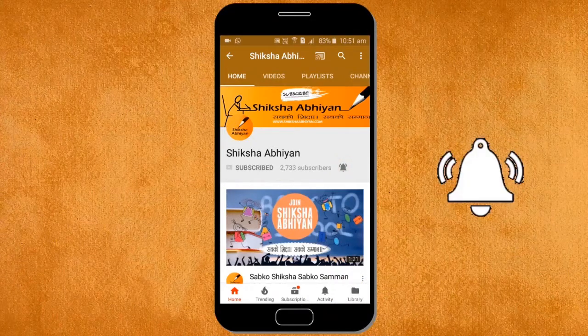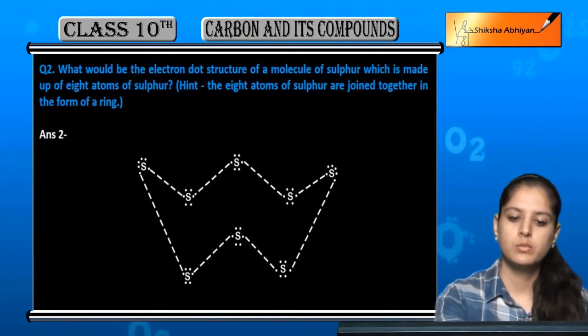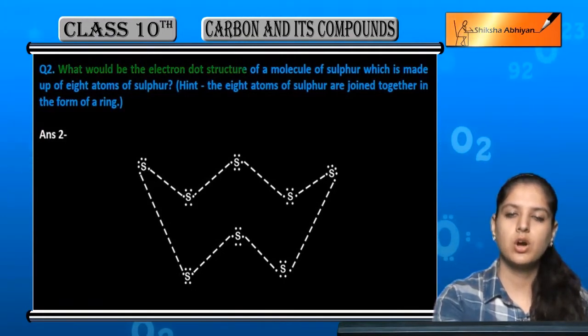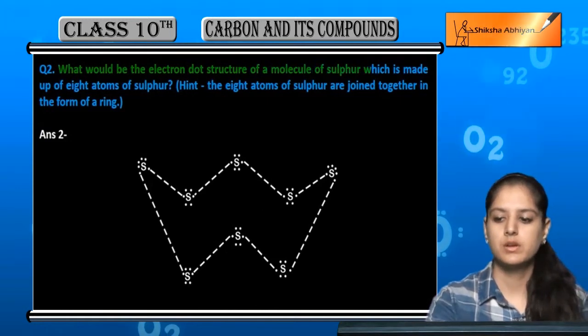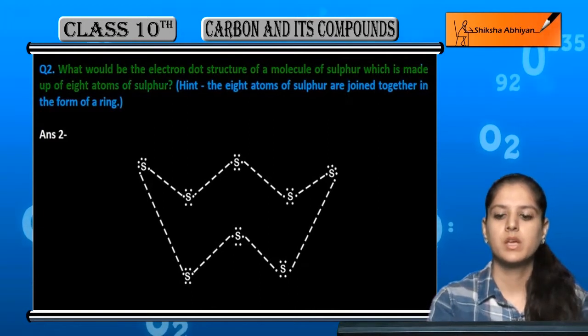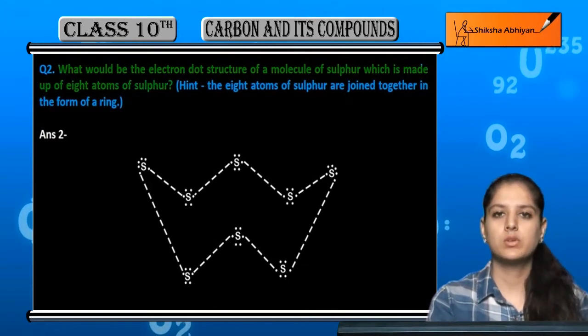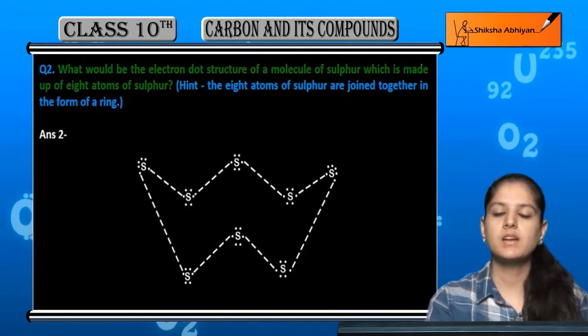Question number two: What would be the electron dot structure of a molecule of sulfur which is made up of eight atoms of sulfur? Sulfur ki eight molecule ka hume electron dot structure banana hai jo ki eight atoms se milkar bana hua hai.